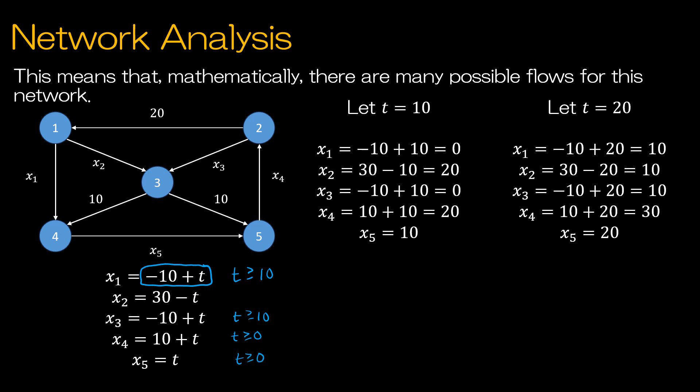And then for x2, 30 minus t, so I need 30 minus t to also be greater than or equal to 0. That gives me 30 is greater than or equal to t, so t is less than or equal to 30. What that tells me is, yes, mathematically t can be anything I want. But in terms of this question, I have to let 10 be less than or equal to t be less than or equal to 30.